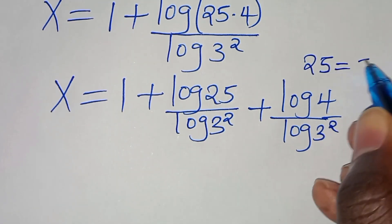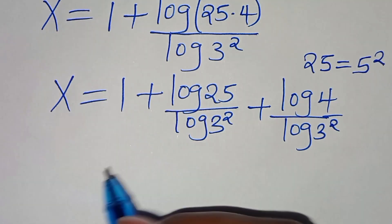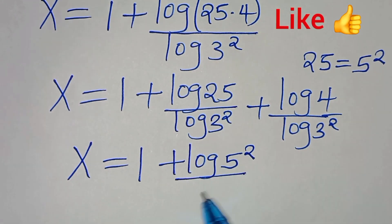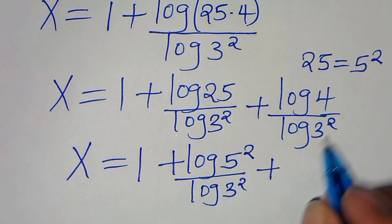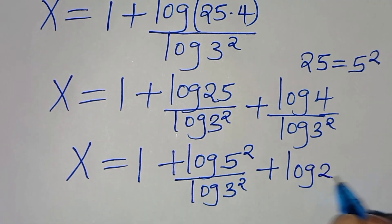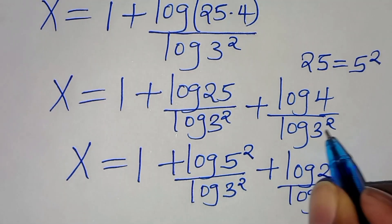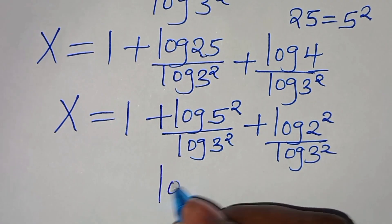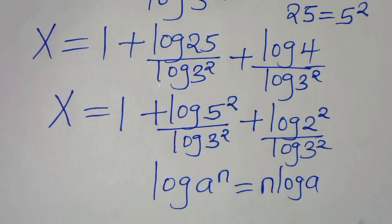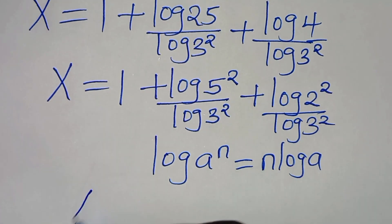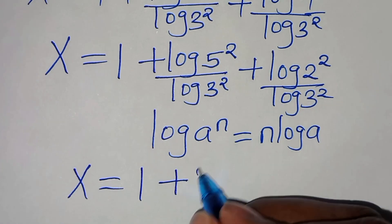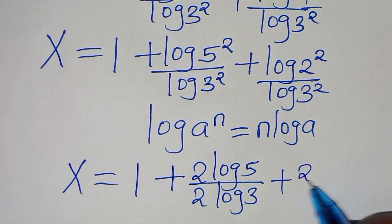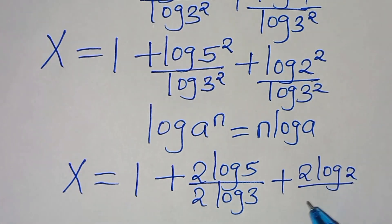So we have x equal to 1, then plus log(5²) divided by log(3²), then plus log(2²) divided by log(3²). The next step is to apply the power property — log(a to the power of n) can be expressed as n·log a. By applying this property, we have x equal to 1 plus 2·log 5 divided by 2·log 3, then plus 2·log 2 divided by 2·log 3.